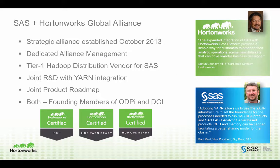The SAS and Hortonworks Global Alliance was established in October 2013, has dedicated Alliance management, and has never been stronger. Hortonworks is a tier one Hadoop distribution vendor for SAS, meaning new SAS software releases are delivered first with the Hortonworks Data Platform. SAS and Hortonworks work jointly at the R&D level, focused on delivering YARN-ready capabilities for HDP. Both are founding members of the ODP and data governance initiatives, and SAS has earned HDP, YARN-ready, and ops partner certifications.